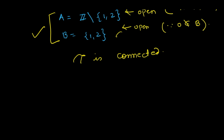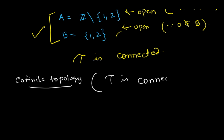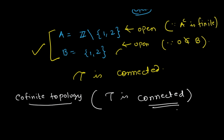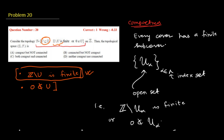Note that if it were only the co-finite topology on an infinite set, then tau would be connected. But in this topology, tau is not connected. So the answer is: tau is compact but not connected. The correct answer is option A.